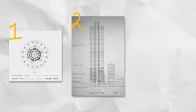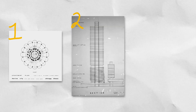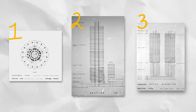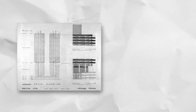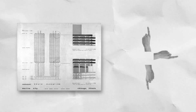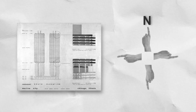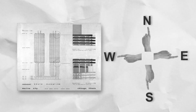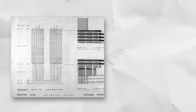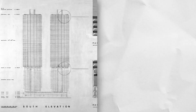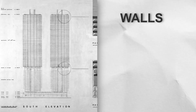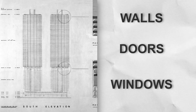Elevations are the types of drawings that are usually created after a plan and section has been drafted. Typically, elevation drawings are created for each of the four cardinal directions of the building, including north, south, east, and west. The elevation drawing provides viewers with a detailed representation of the building's walls, including any doors, windows, and other architectural details.